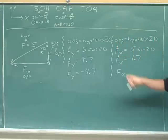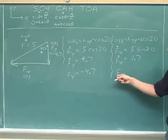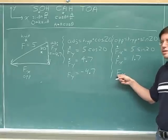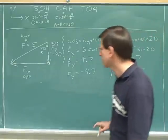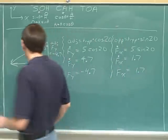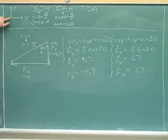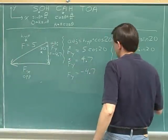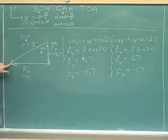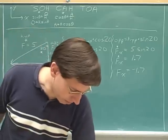The magnitude of f_x is 1.7. Now for the signed component: we've chosen right as our positive direction, but f_x is pointing left, which is the negative direction. You can see how crucial it is to put the arrows in on the legs — without them, you can't figure out the sign of the component.